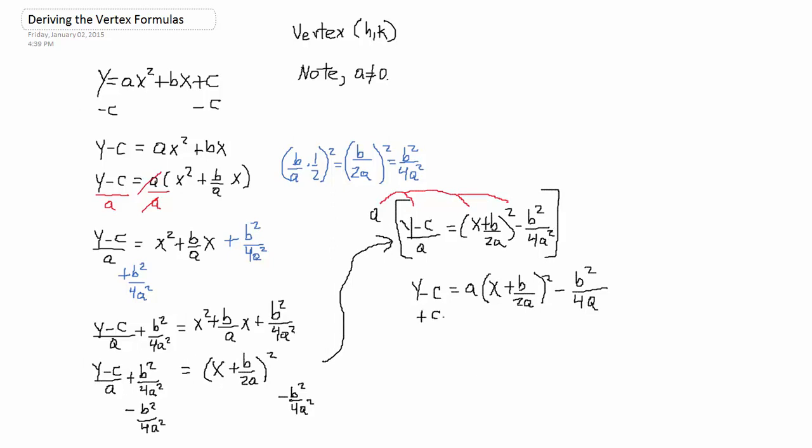Now, if we add C to both sides, we will get an expression that looks like vertex form. And we'll get there in a second. So, that's X plus B over 2A. All of that squared. Minus B squared all over 4A plus C.